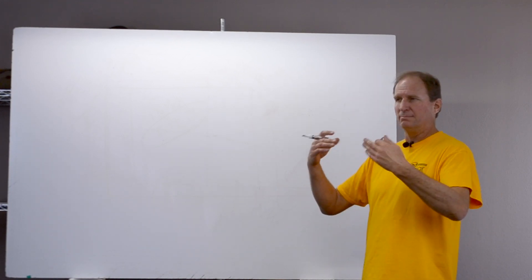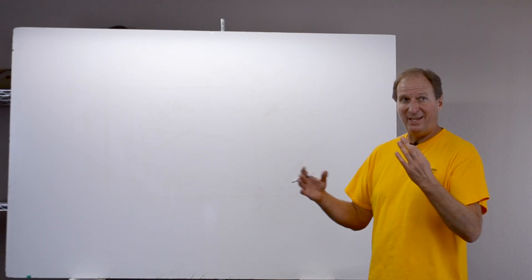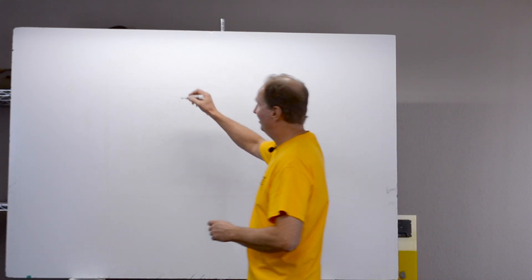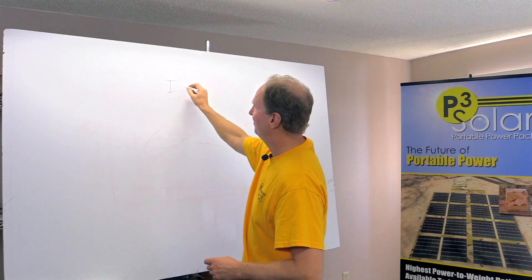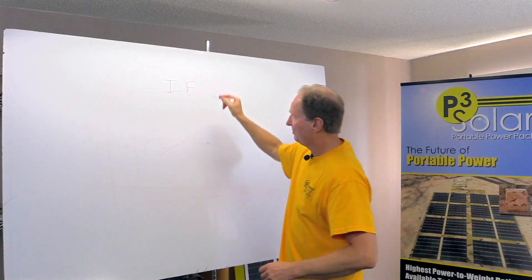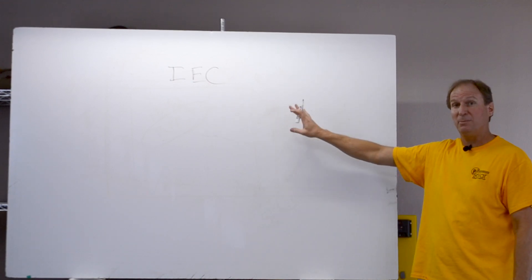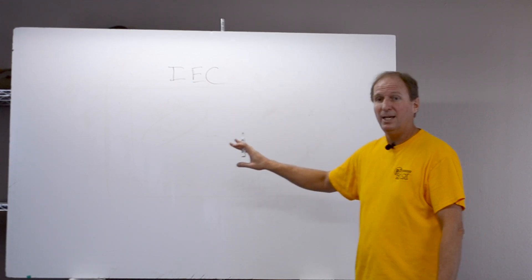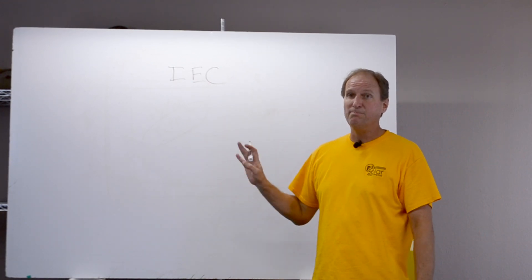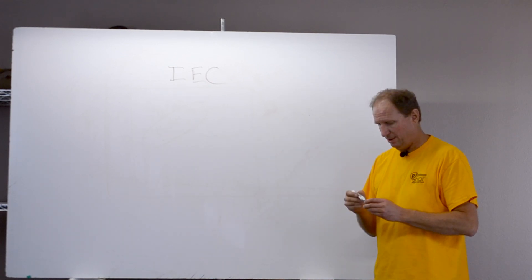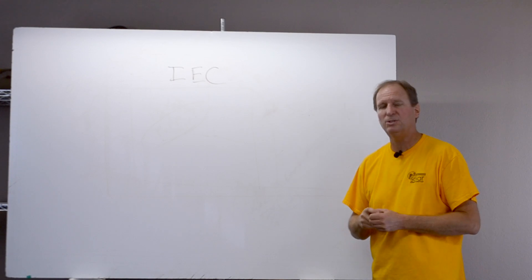Okay, so when solar panels were in their infancy, somebody had to decide that they had to measure them all the same, and that was the IEC. So that's the International Electrotechnical Commission, it's actually European, and Europeans wrote most of these requirements for solar panels, or at least the test methods for solar panels.